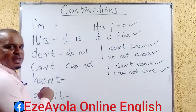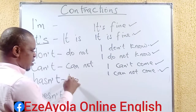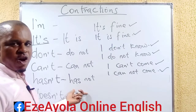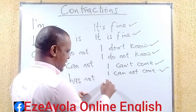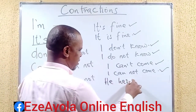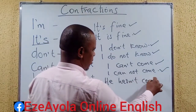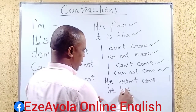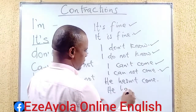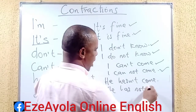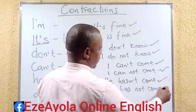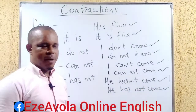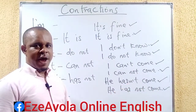We have 'hasn't', which means 'has not'. For example: 'He hasn't come' or 'he has not come.' Whichever one, they are both correct. 'He hasn't come' is the contracted form; 'he has not come' is the full form.